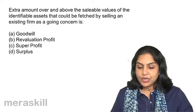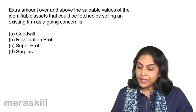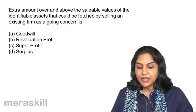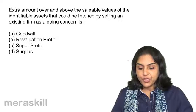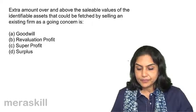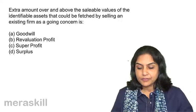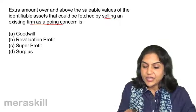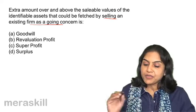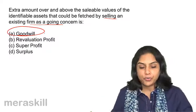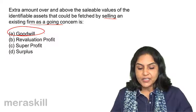Extra amount over and above the saleable values of the identifiable assets that could be fetched by selling an existing firm as a going concern is: A. Goodwill. B. Revaluation profit. C. Superprofit. And D. Surplus. When you are selling an existing firm as a going concern, that extra amount is on account of goodwill. So correct answer is A, goodwill.